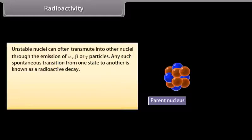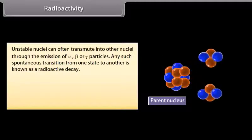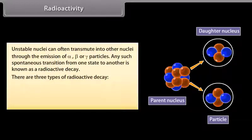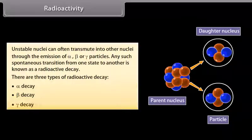Radioactivity. Unstable nuclei can often transmute into other nuclei through the emission of alpha, beta, or gamma particles. Any such spontaneous transition from one state to another is known as a radioactive decay. There are three types of radioactive decay: alpha decay, beta decay, and gamma decay.